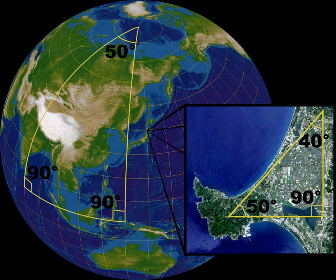The exterior angle theorem is Proposition 1.16 in Euclid's Elements, which states that the measure of an exterior angle of a triangle is greater than either of the measures of the remote interior angles.